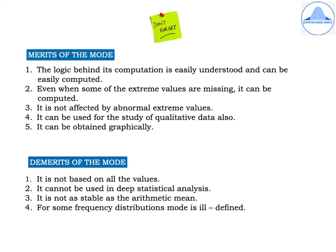The merits and demerits of the mode can be asked as a two-mark question, so learn at least two points. Merits: (1) Easy to understand and compute. (2) Can be computed even when some extreme values are missing. (3) Not affected by abnormal extreme values. (4) Can be used for qualitative data. (5) Being a positional average, it can be obtained graphically. Demerits: (1) Not based on all values. (2) Cannot be used in deep statistical analysis. (3) Not as stable as the arithmetic mean. (4) For some frequency distributions, the mode is ill-defined.